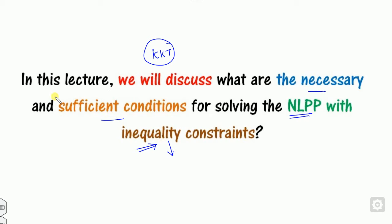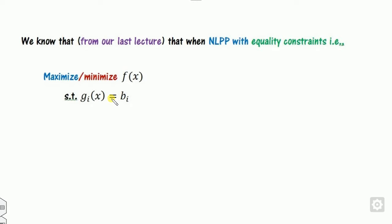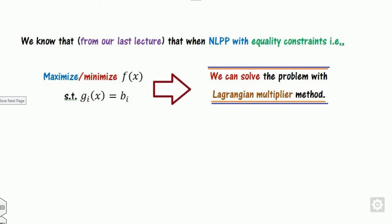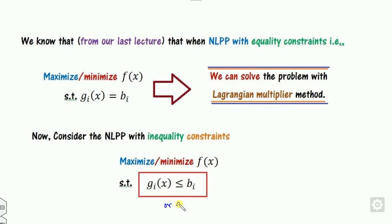On the other hand, in the last lecture we saw that when the constraints are equality sign for any non-linear programming problem, we can solve this with the help of the Lagrange multiplier method. But what will happen if we are trying to solve the problem with constraints either as less than or greater than or equal to sign? Then we are unable to solve this with the help of the Lagrange multiplier. We will solve this with the help of the KKT conditions.